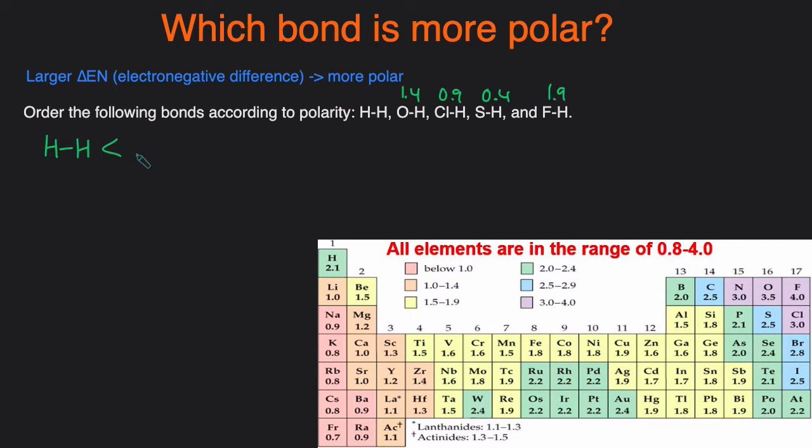So the next polar one is S-H with a difference of 0.4, then Cl-H with a difference of 0.9, and then O-H with a difference of 1.4. And lastly, F-H with a difference of 1.9. So this is ranked in terms of least polar to most polar.